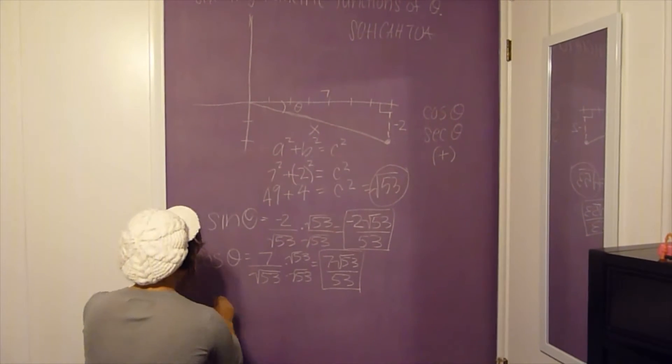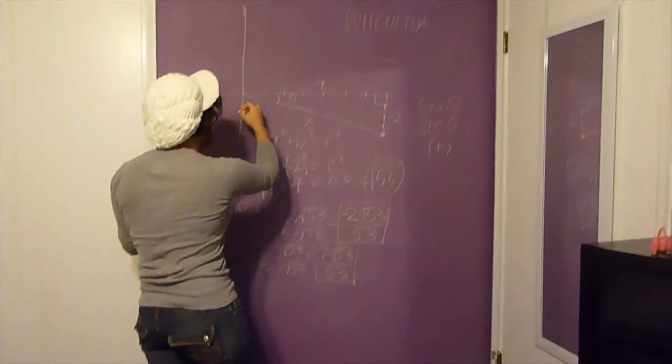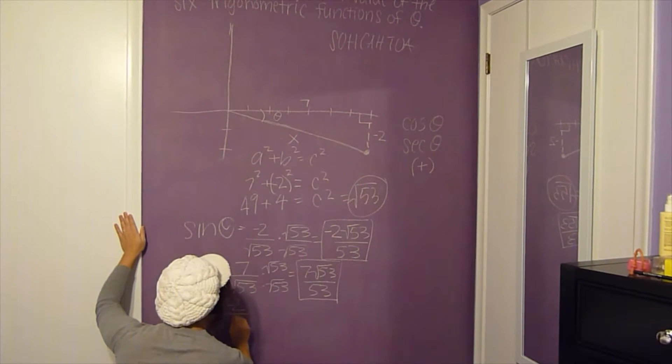And for tangent of theta, you're going to have opposite over adjacent. So it'll just be -2 over 7.